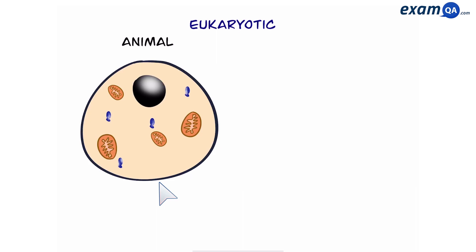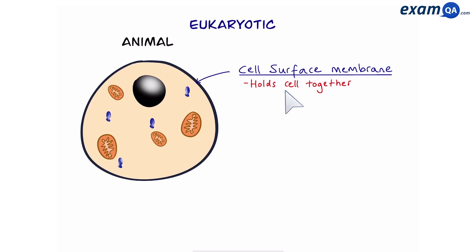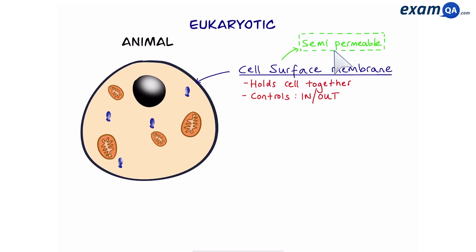Let's look at the animal cell in a bit more detail. We have the cell surface membrane, which holds the cell together and controls what goes in and out of the cell. A special property is that it is semi-permeable, meaning it allows some molecules to pass in and out freely; however, larger molecules cannot pass as easily.